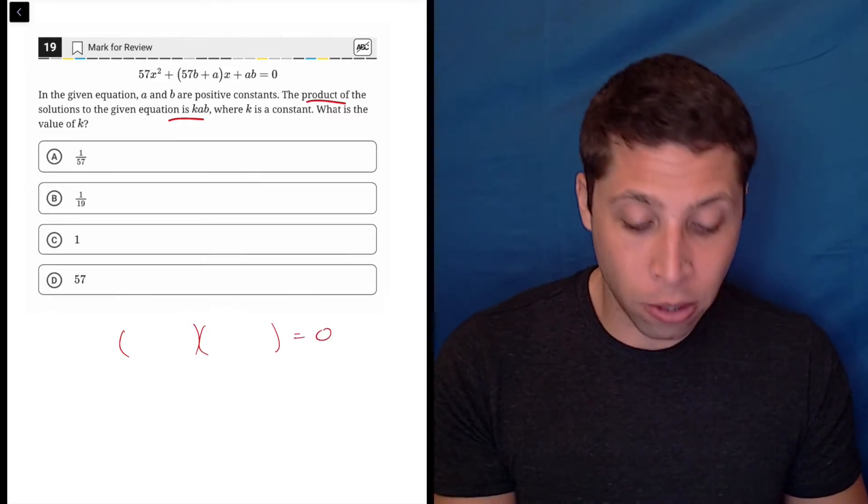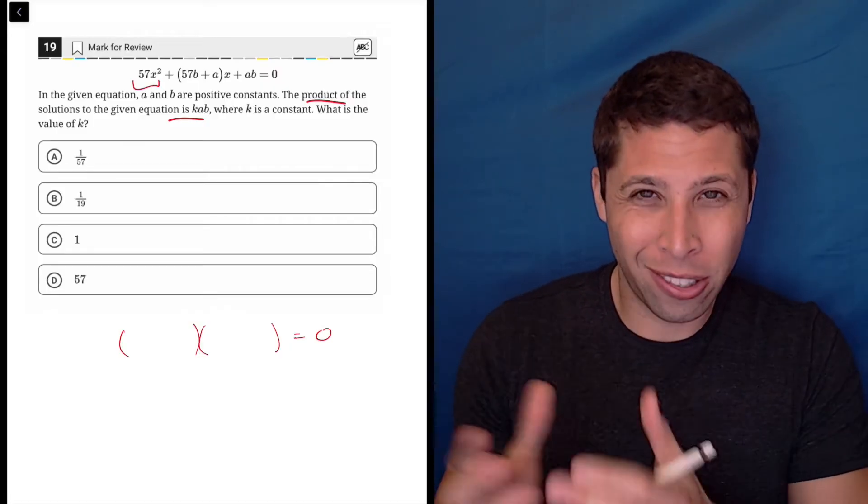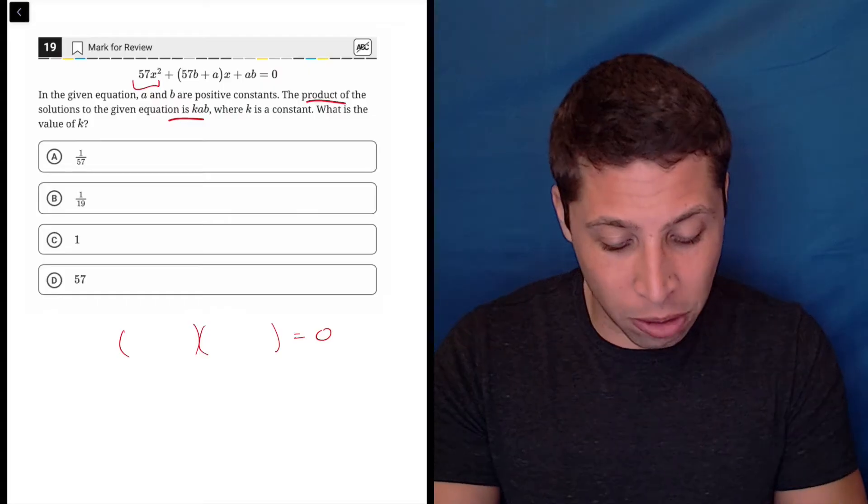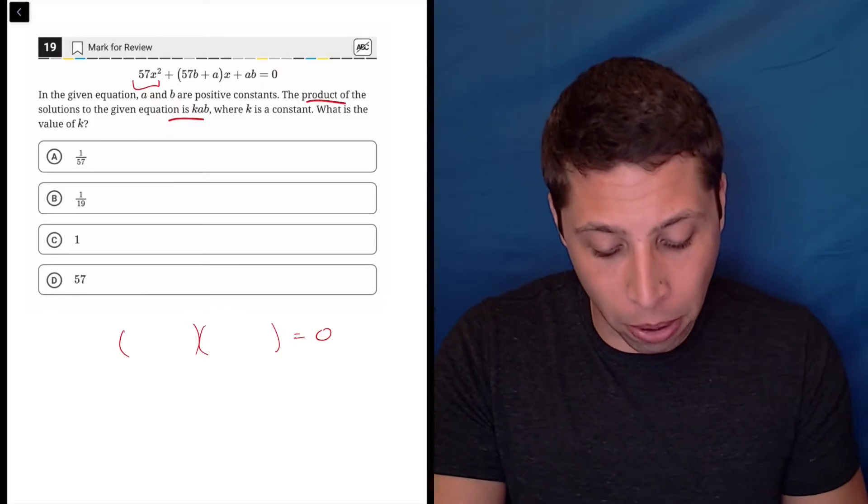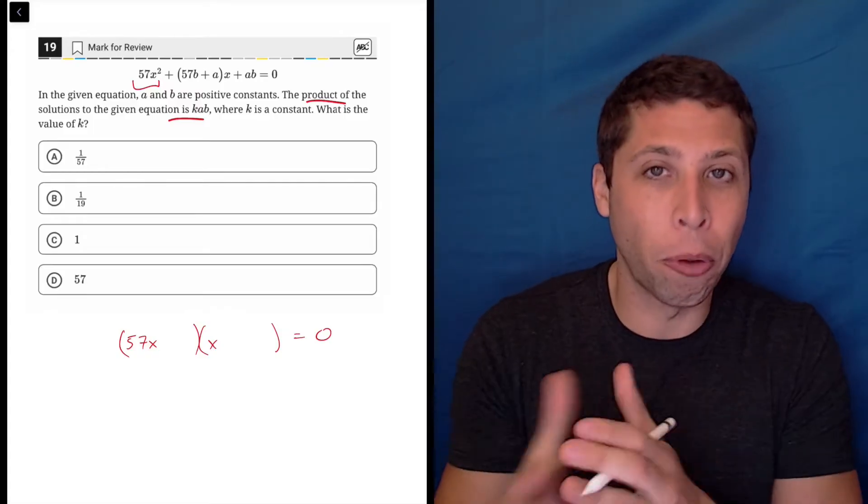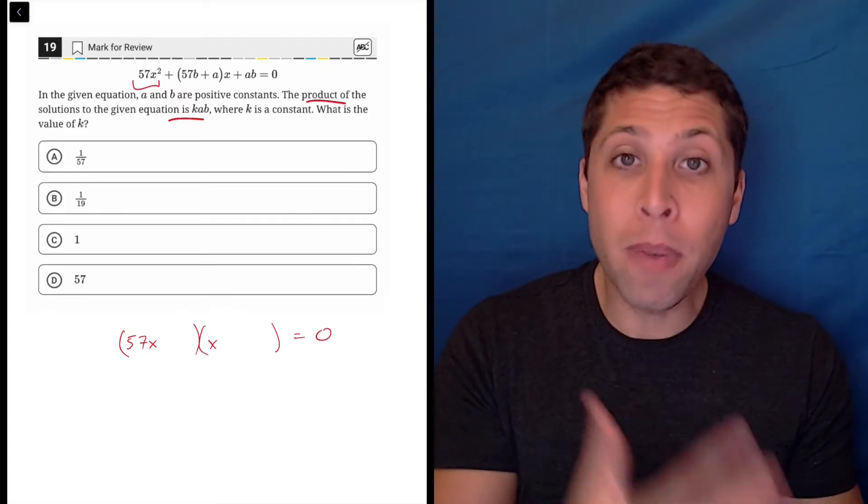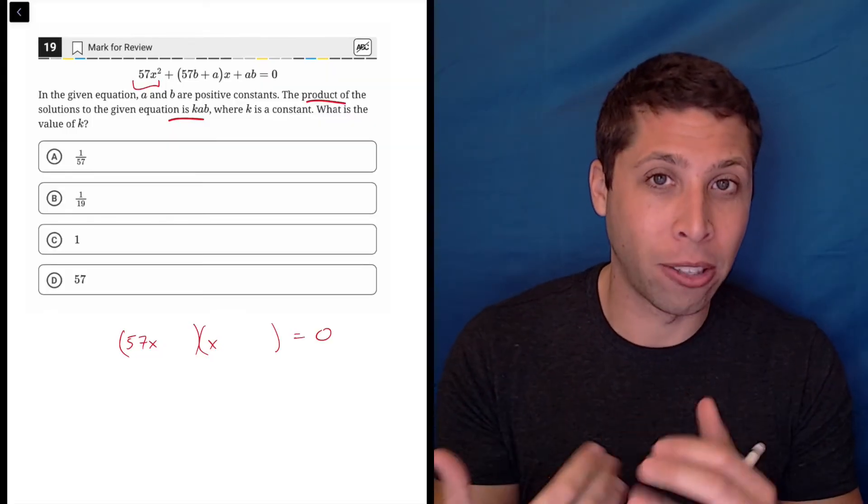So I know the middle part is weird, but focusing on the x squared part, there's 57. Just kind of based on the numbers in the middle part, I guess it has to be 57x and x, right, those would multiply to get me 57x squared. And then a and b would multiply to get me a times b, right, so that's the c term.